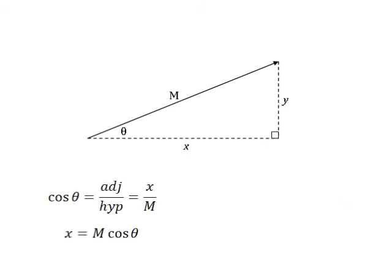Cos theta equals adjacent over hypotenuse equals x over m. Therefore, x equals m cos theta, and hence we managed to find the horizontal component of the vector from its magnitude m and its direction theta.